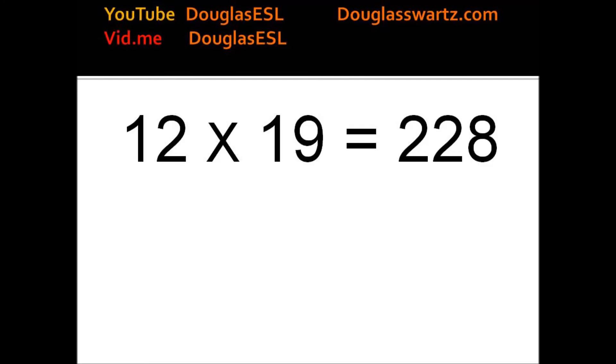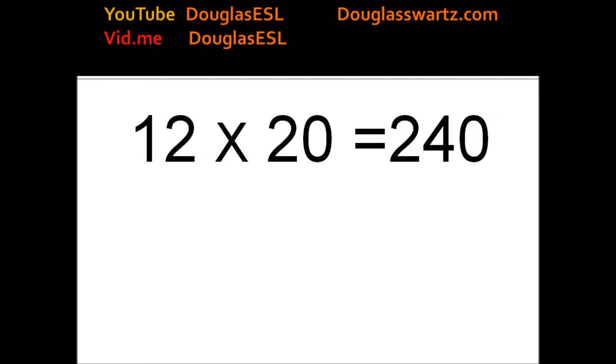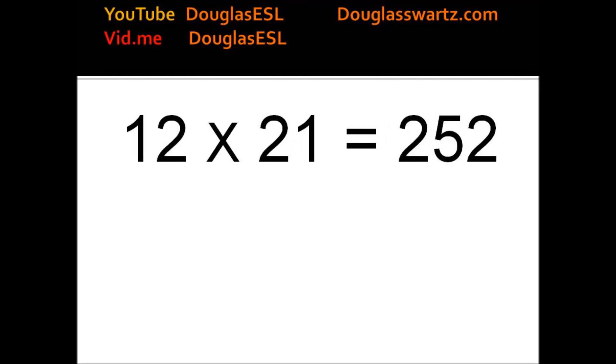12 times 19 equals 228. 12 times 20 equals 240. 12 times 21 equals 252. 12 times 22 equals 264.